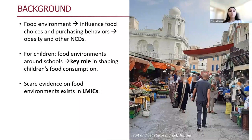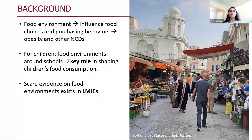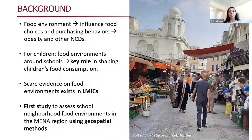While there is considerable evidence from high-income countries on school neighborhood food environment, there is less evidence with youth in low-income countries. This is why this study aims to fill this research gap. It is the first study to assess school neighborhood food environment in the Middle East and North Africa region — the MENA region — using geospatial methods.